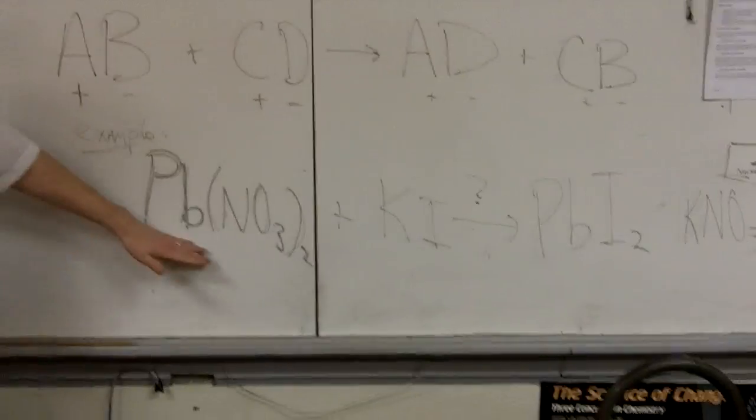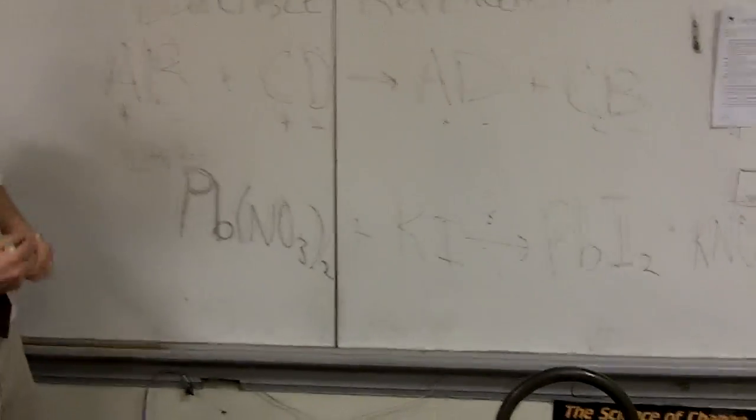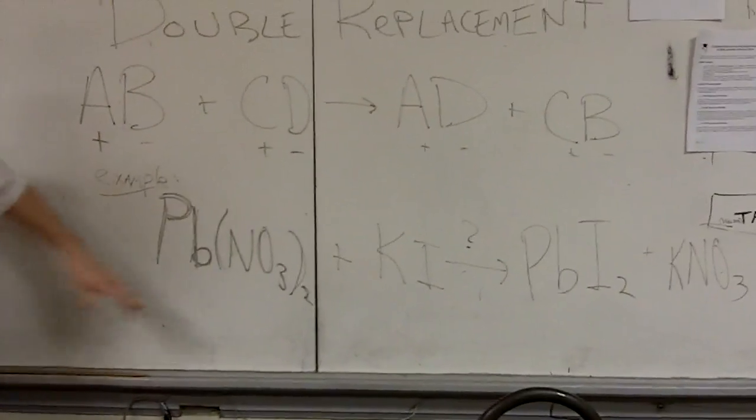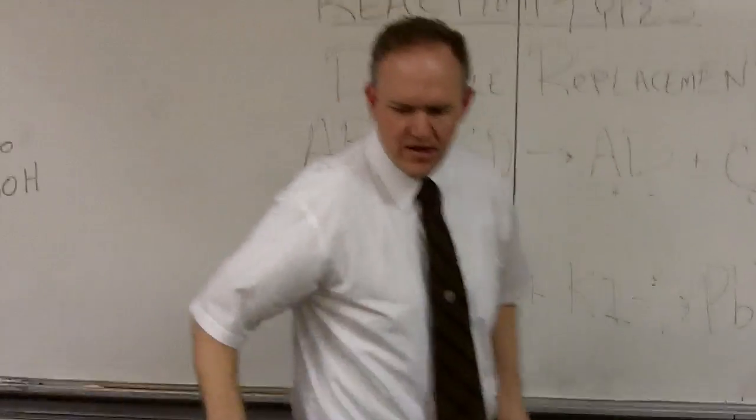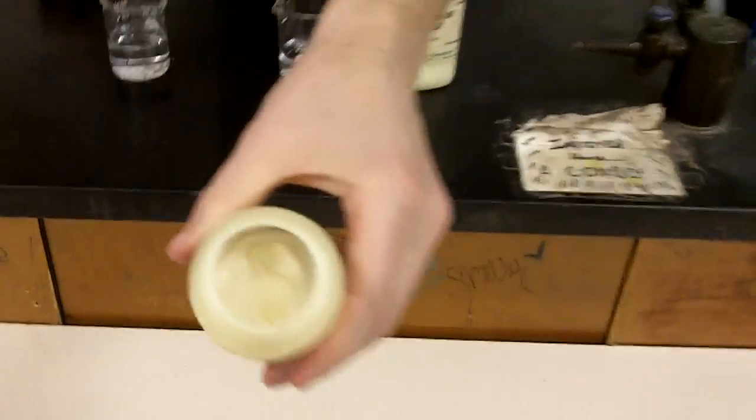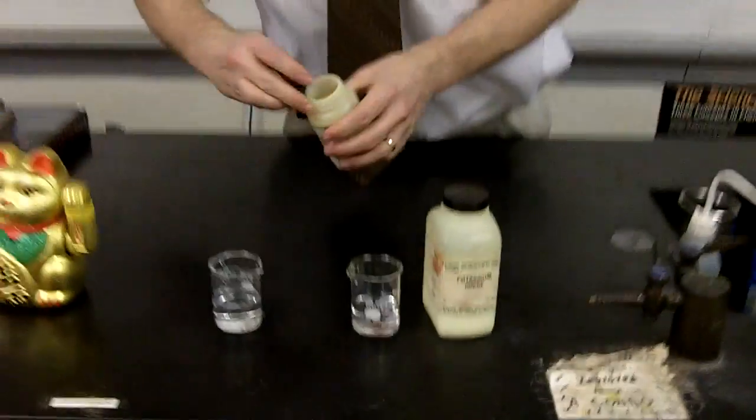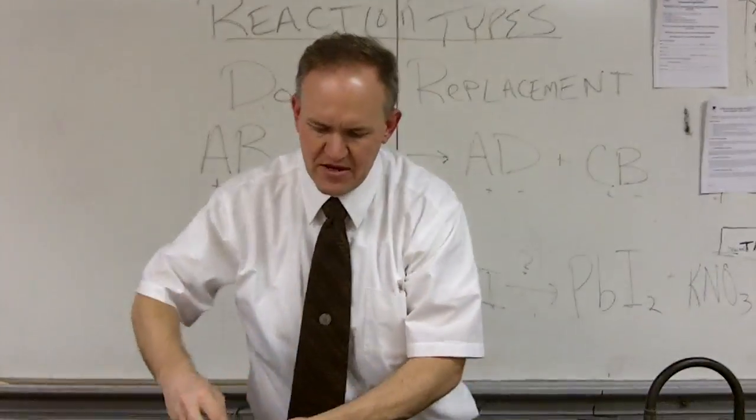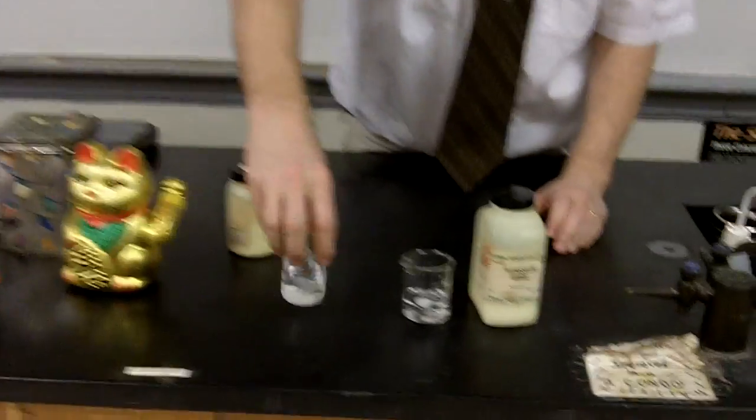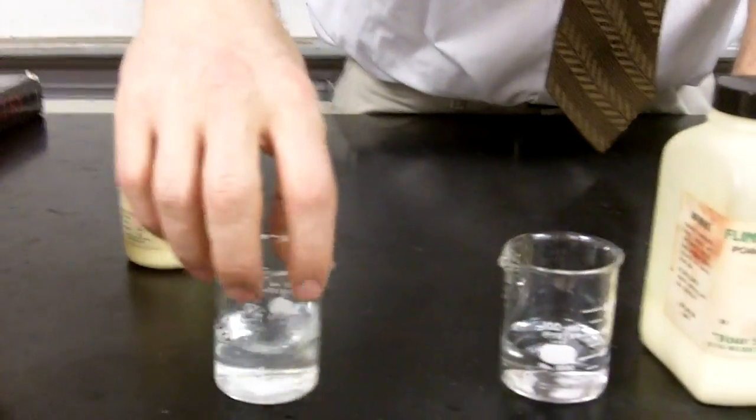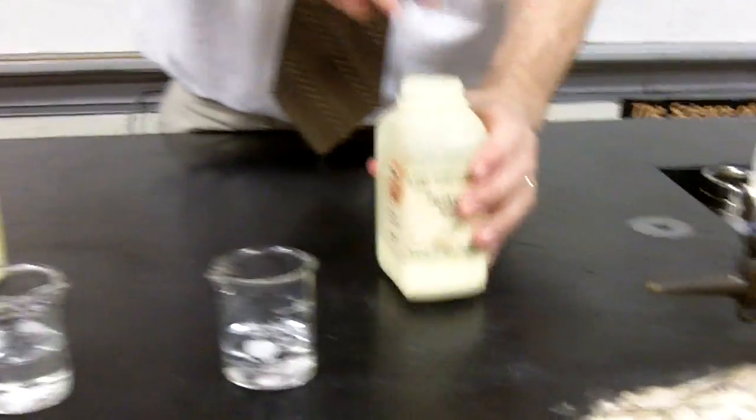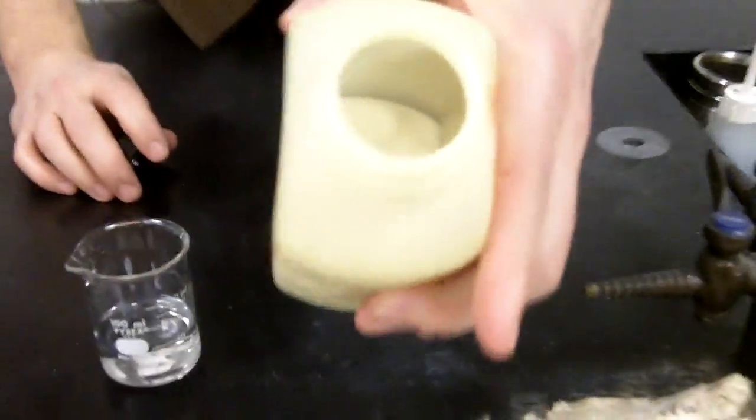And we weren't worrying about balancing, but that would be an example. And so I can show you this actual reaction right now. We can take some lead nitrate, and lead nitrate is a white crystal powder, just ionic compounds tend to look like that. I've dissolved some into this distilled water. It's not completely dissolved, but it's dissolved enough to make the reaction work.